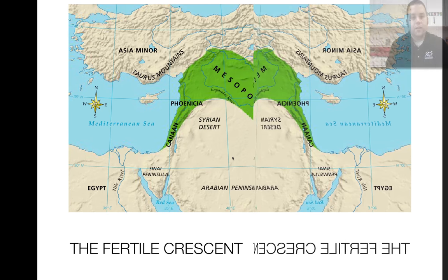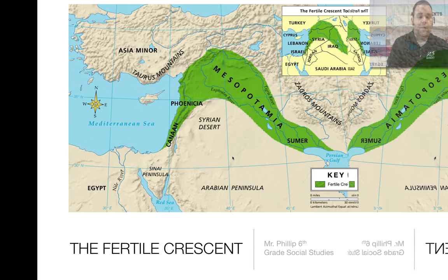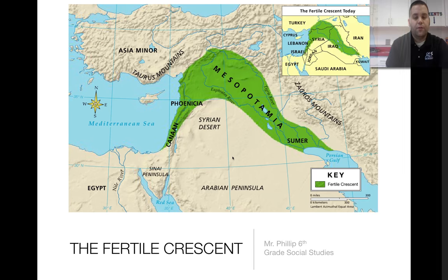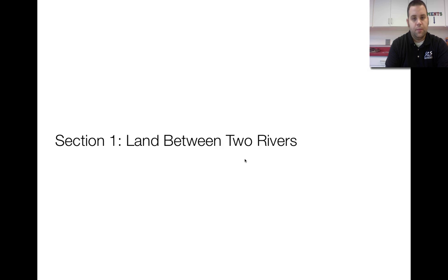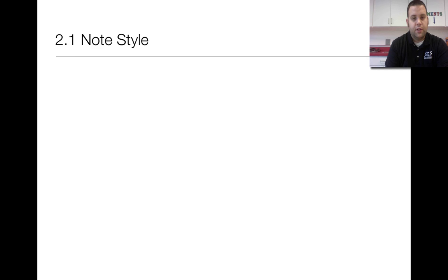Howdy, sixth grade. So this is chapter two, the Fertile Crescent. We're going to be talking about Mesopotamia and the early civilizations that lived here in what was called the Fertile Crescent. Our first lesson is called The Land Between Two Rivers.